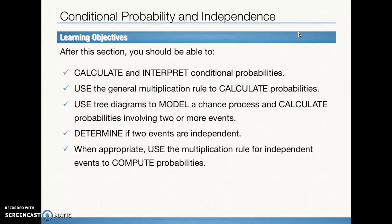Our objectives for this section are to calculate and interpret conditional probabilities, and just as a reminder, those are related to the conditional distributions that we learned about in Chapter 1. Use the general multiplication rule to calculate probabilities. Use tree diagrams to model a chance process and calculate probabilities involving two or more events. Tree diagrams are one of our favorites, especially for conditional probabilities and AND probabilities. Determine if two events are independent, and when appropriate, use the multiplication rule for independent events to compute probabilities.